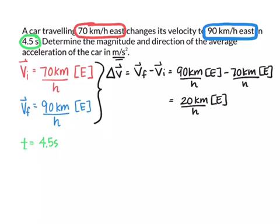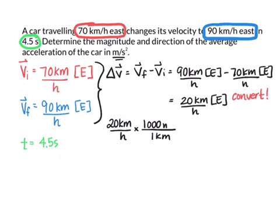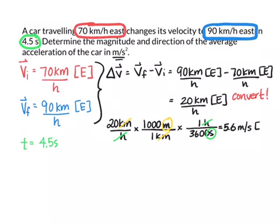Now we need to convert that value into meters per second. We're going to take our 20 kilometers per hour and first change kilometers into meters — we know that one kilometer is 1,000 meters — which cancels out our kilometers, leaving us with meters per hour. Then we change hours into seconds: one hour has 3,600 seconds, which cancels our hours, leaving us with meters per second. With some rounding, we get 5.6 meters per second east.